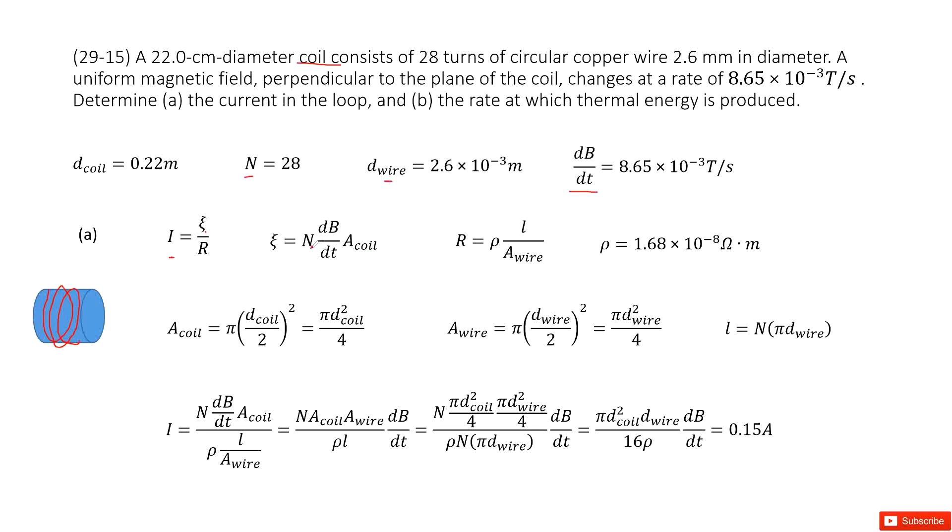So you can see N is given, dB over dt is given. Looks like we need to find the cross-sectional area for the coil. So that is A. Write A coil as pi R squared. We write it there.